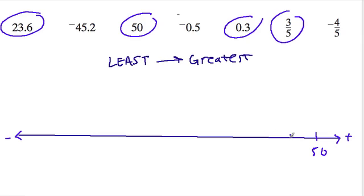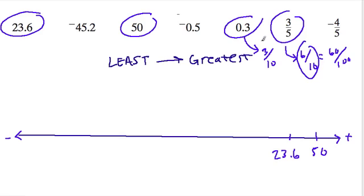Then we have 23.6. The question is, what's bigger: 0.3 or 3 out of 5? Well, 3 out of 5 - what's that out of 10? That'd be 6 out of 10, or 0.6. And 0.3 is 3 tenths. Notice that 6 tenths is larger than 3 tenths. All I did was double the 3 to make 6, and to keep this relationship constant, double the 5. So 6 out of 10 is the same as 3 out of 5, and that's bigger than 0.3. So we have 3 fifths, and then fairly close to that, 0.3.